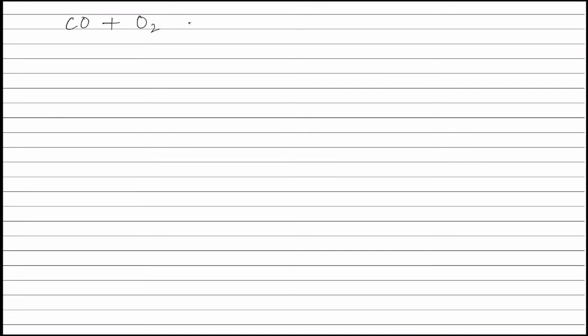Applying the principle of atom conservation on carbon atoms for equation 2 — carbon monoxide reacting with oxygen to form carbon dioxide — we get: 1 × moles of carbon monoxide, that is X moles, equals 1 × moles of carbon dioxide.